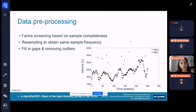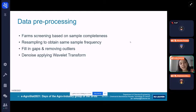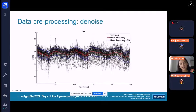However, due to this resampling, we gained gaps in our milk dataset that we had to fill in. And also, we had to remove some outliers, as you can see in the graph. And lastly, we decided to denoise the data. As you can see here, this is the fat content over time. The black lines are referring to every farm. The red line is the mean trajectory of the fat content over time. And the blue lines are the mean trajectory plus minus the standard deviation.